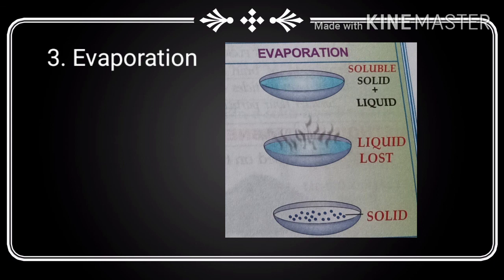The next method to separate solid from liquid is evaporation. This method is based on the principle of evaporation of the liquid component in a soluble solid-liquid mixture. A soluble solid can be separated from liquid by evaporating the liquid component through heating. During evaporation, the liquid component is lost to the atmosphere and the solid remains behind. An example is evaporation of a common salt solution, where water evaporates on heating and salt remains behind.